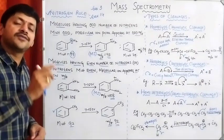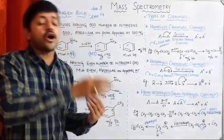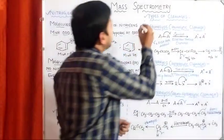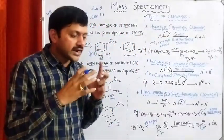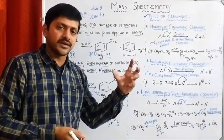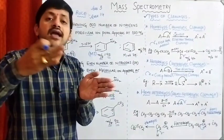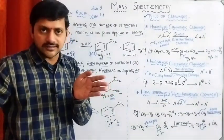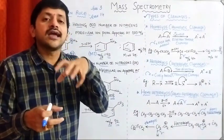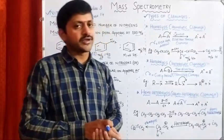This is the nitrogen rule. It is very helpful to identify whether a compound contains nitrogens or not, and whether an even or odd number of nitrogens are present — thereby allowing us to deduce the structure of the compound. Now let's see the next topic: types of cleavages in mass spectrometry. The sample molecules are bombarded with a high energy electron beam to produce the molecular ion, which is then subjected to different kinds of cleavages — commonly called fragmentation — producing small species called fragment ions.